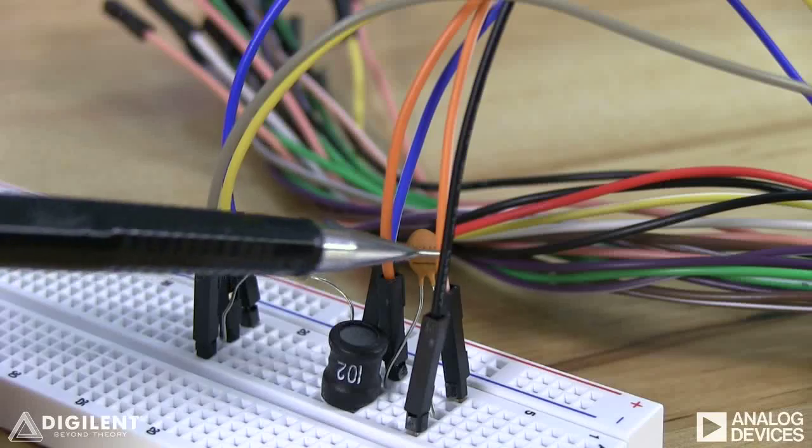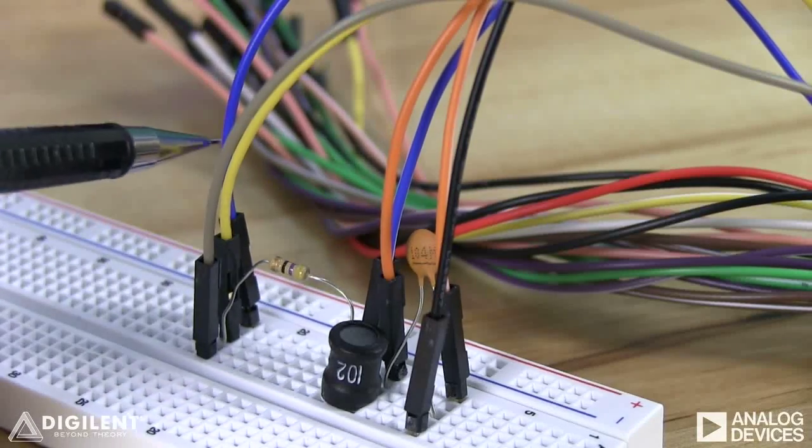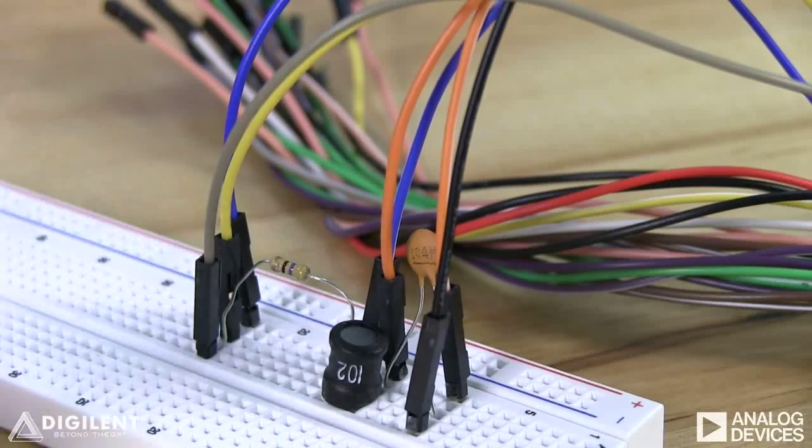Ground is over here. We're using channel one of the oscilloscope to measure the voltage across the capacitor. We're using channel two to measure the voltage across this resistor.